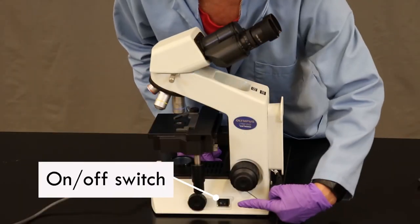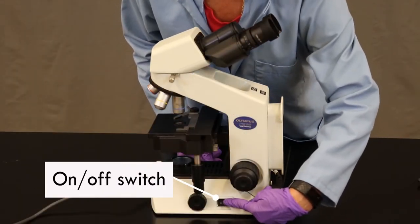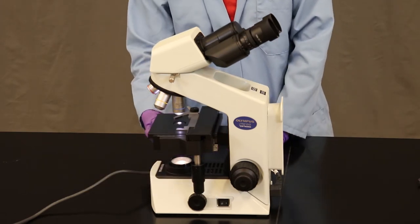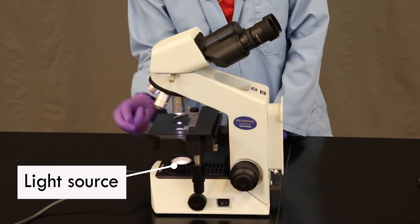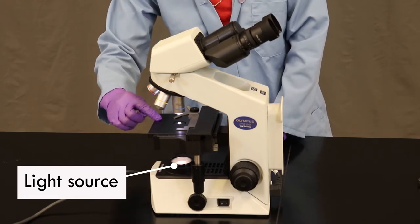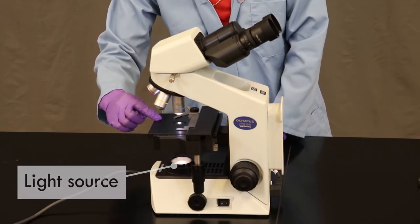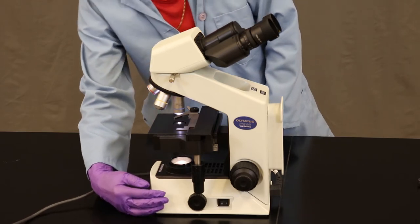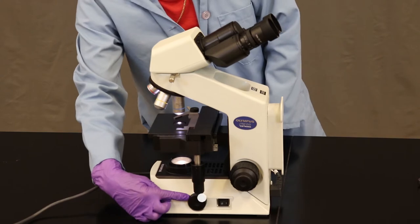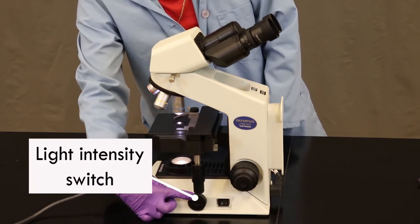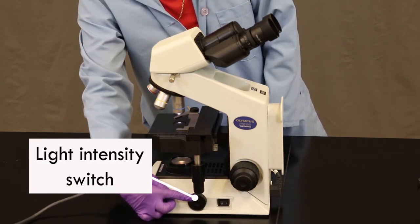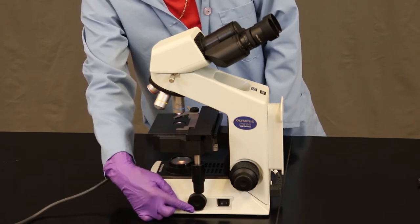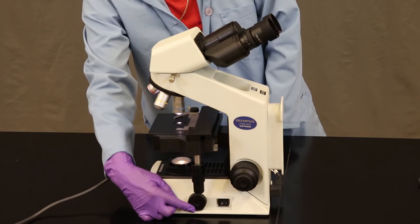It has an on-off switch right here. I just turned it on and when I turn it on, the light comes on and puts light up to the stage where the slide is going to be. We can control the intensity of the light with this knob here. It's a dimmer knob that can start reducing the amount of light that reaches the slide, or in the other direction increasing the amount of light that reaches the slide.